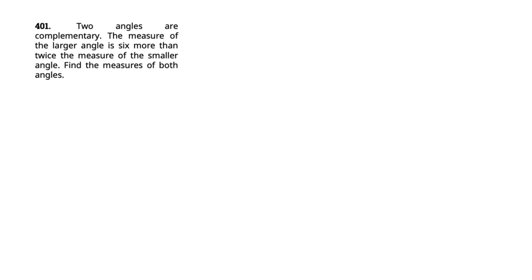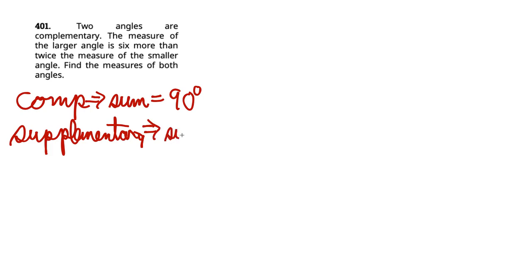Two angles are complementary. So one thing I want to write right off the bat is about complementary versus supplementary. Comp for complementary means sum equals 90 degrees. And supplementary means sum equals 180 degrees. And the way I remember that, C is 90, C comes before S. 90 comes before 180. So complementary, supplementary, 90 and 180 degrees sum, respectively.